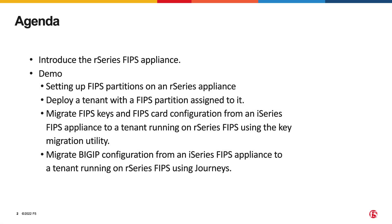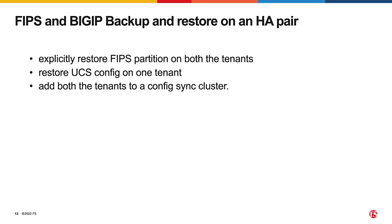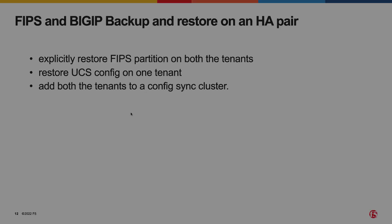This concludes the last step. We've successfully used Journeys to migrate BigIP configuration from an I-Series FIPS appliance to a tenant running on the R-Series FIPS appliance. It is important to note that if you're attempting to do a FIPS BigIP backup and restore or an HA pair, you'll need to explicitly backup and restore the FIPS partition on both tenants that form the HA pair, do a UCS restore using Journeys on one tenant, and then add both tenants to a config sync cluster.